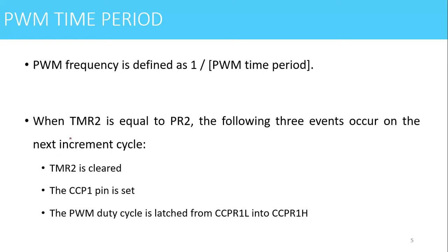When Timer 2 equals PR2, the following three events occur on the next increment cycle: Timer 2 is first cleared before the start of the next cycle; the CCP1 pin is set to start the new cycle; and the PWM duty cycle is latched from CCPR1L into the CCPR1H register. The duty cycle is stored in the CCPR1L register.